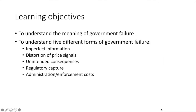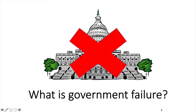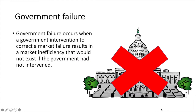In this video you'll learn about government failure and five different forms of government failure. Government failure occurs when a government intervention to correct a market failure results in a market inefficiency that would not exist if the government had not intervened. Essentially the market would be better served had the government not intervened in the first place.